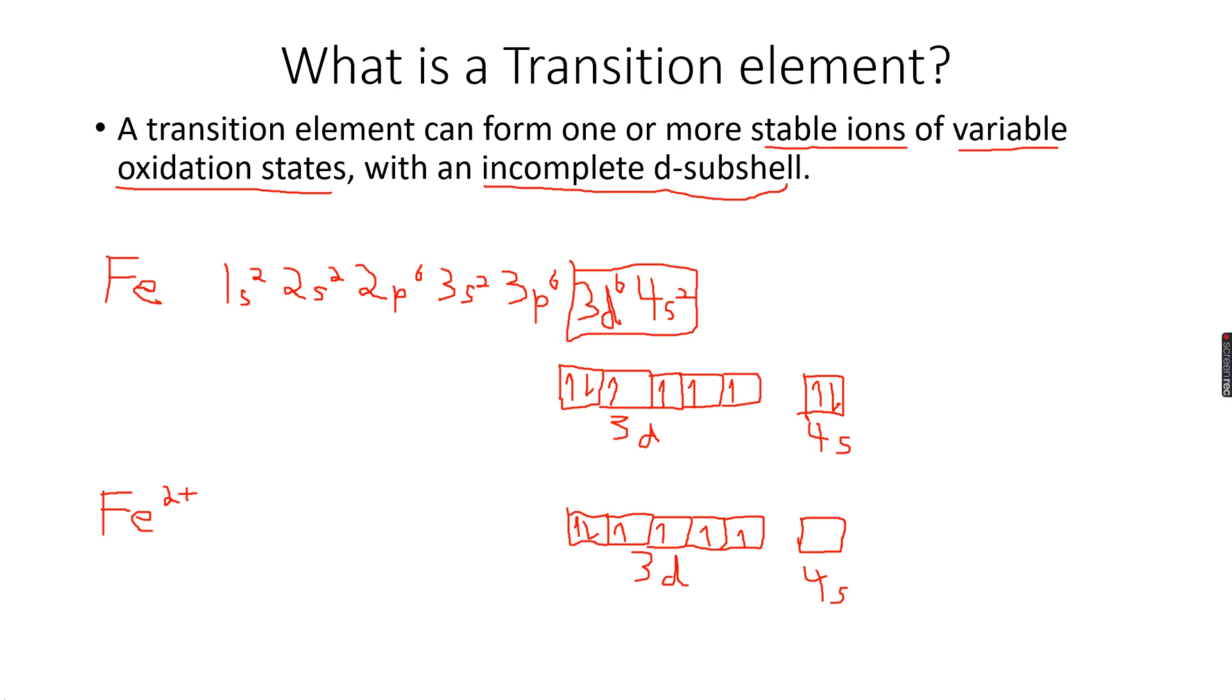Now let's take the example of Fe3+, the other ion that iron forms.